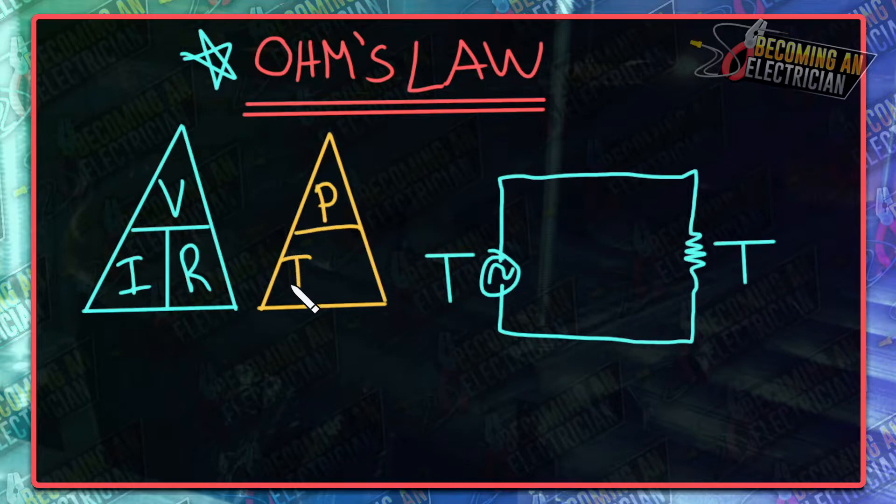We have voltage, which can also be seen as E sometimes. Don't get confused, keep it really simple—it's the same thing, just voltage. I is current, and it's nice to put them in the same spot so these triangles are easy to navigate.